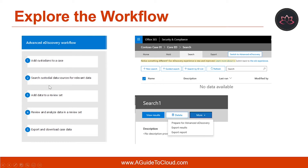The second step is to search custodial data sources for data relevant to the case. After you add custodians to a case, use the built-in search tool to search the custodian data locations for data that may be relevant. The third step is to add data to a review set. Once you have configured and verified that a search returns the desired data, the next step is to add the search results to a review set.